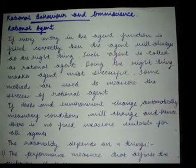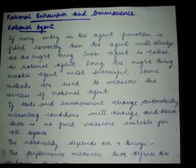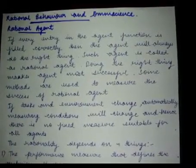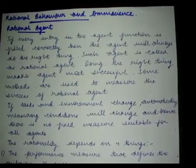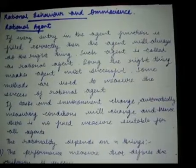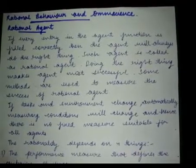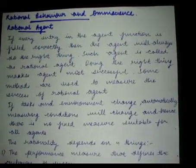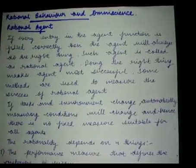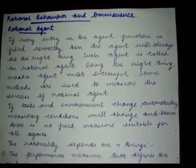If the sequence of environment state changes is desirable — that is, if the changes produced in the environment are what the researcher expected as the correct output from the machine — then the agent is said to be rational. If tasks and environment change automatically, measuring conditions will change, and hence there is no fixed measure suitable for all changes in the agent's decisions. That is what rational behavior means.